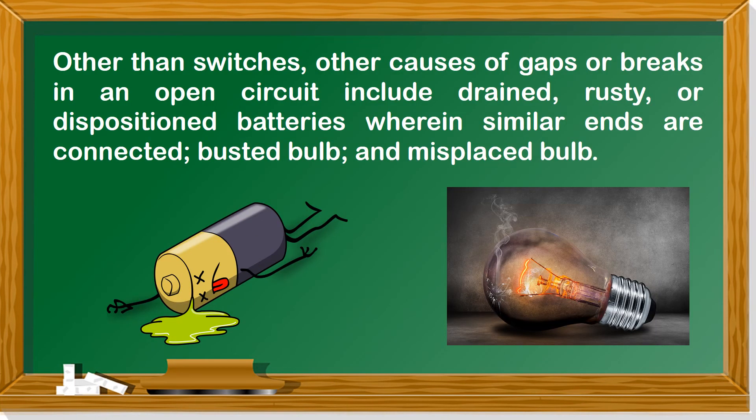Other than switches, other causes of gaps or breaks in an open circuit include drained, rusty, or disposition batteries wherein similar ends are connected, busted bulb, and misplaced bulb.